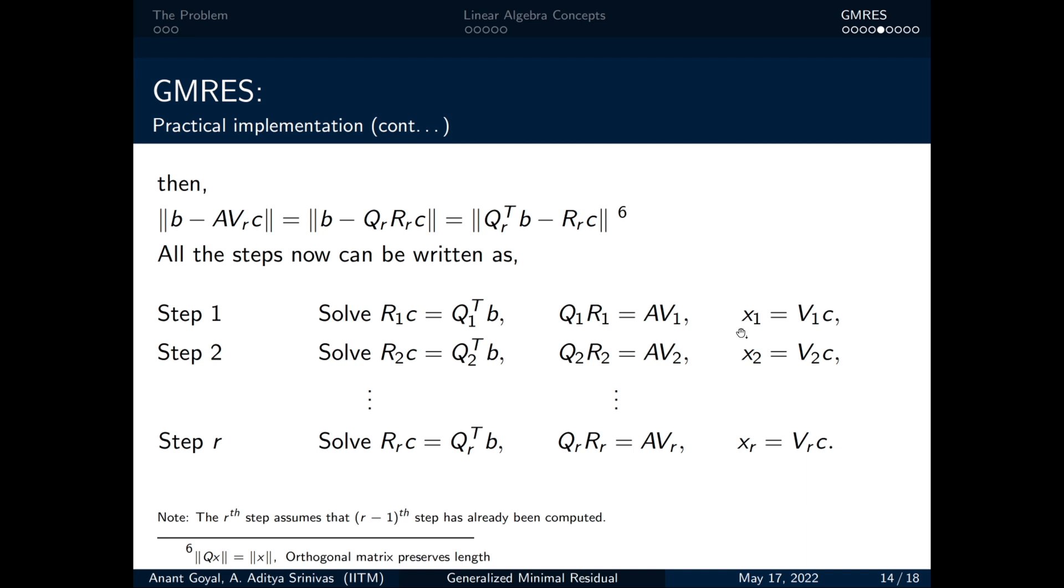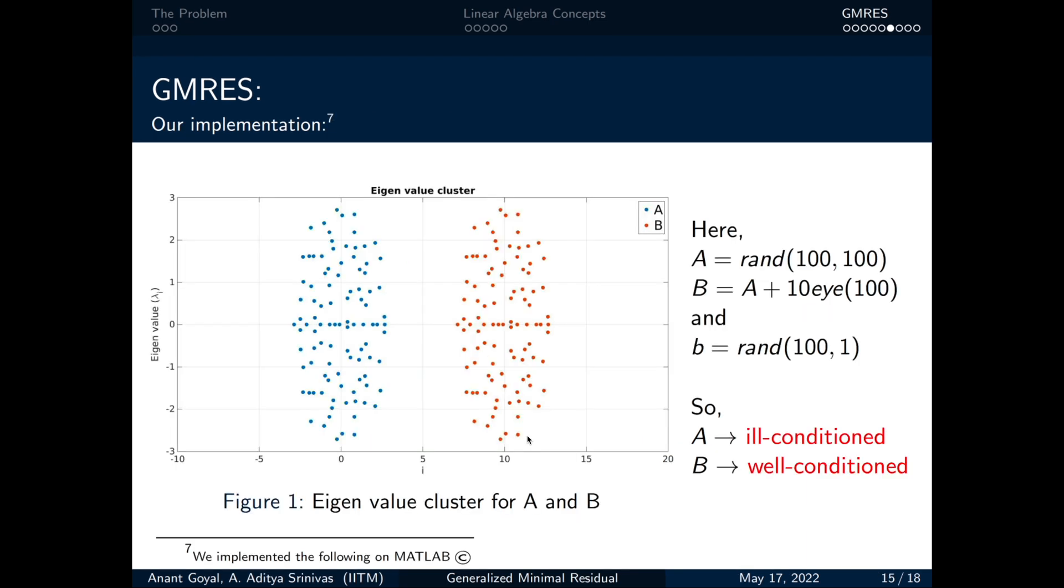We have implemented the algorithm in MATLAB. For illustration, we have taken two random matrices A and B and a random vector b of order 100. We have chosen A and B in such a way that A is ill-conditioned matrix and B is well-conditioned matrix. We can also observe that from the eigenvalue cluster shown in figure 1.